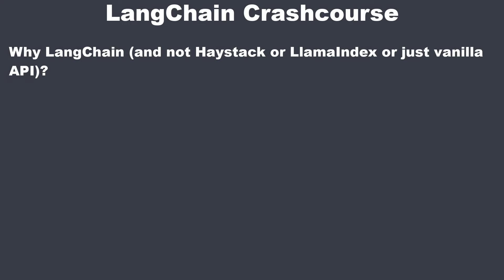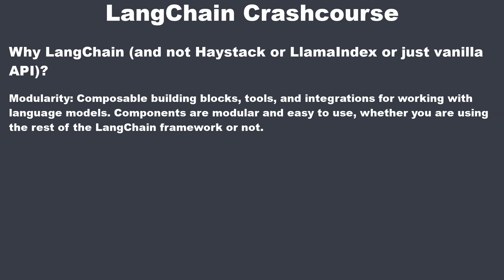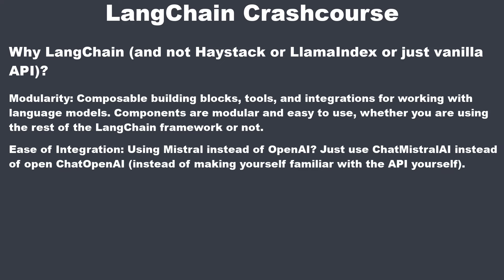You still might ask: why use LangChain at all? Why not just use the plain OpenAI API? LangChain is particularly useful for several reasons. It offers a modular approach to building LLM-based applications, allowing you to easily swap out different components to meet your specific needs. The most important reason is ease of integration — it provides seamless integration with a variety of data sources, APIs and other tools. If you want to switch from OpenAI to Mistral, you just have to swap out a single class. That's awesome.